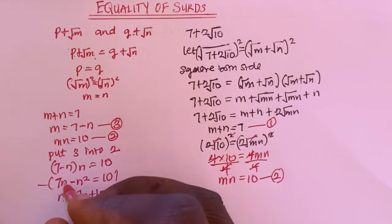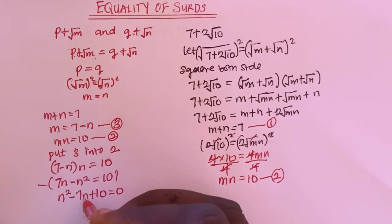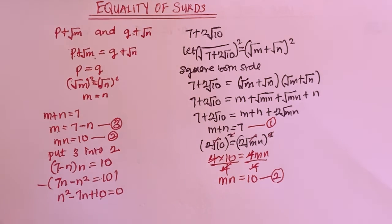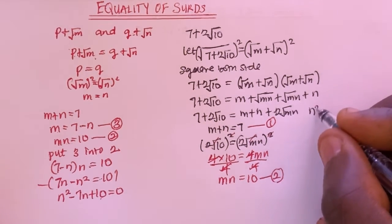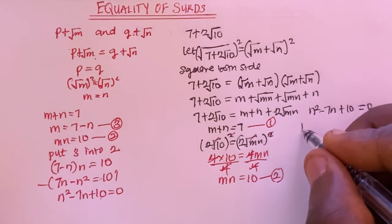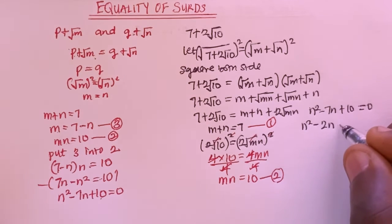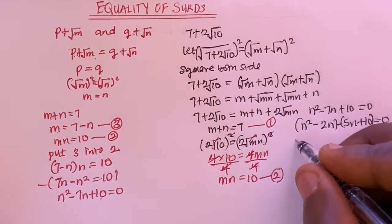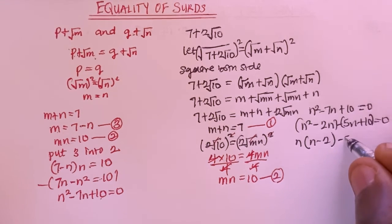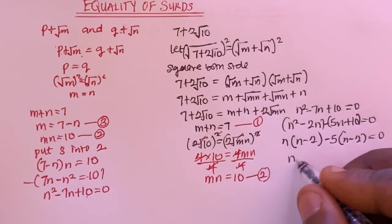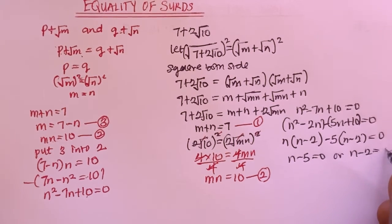If I multiply everything by minus one, I'm going to have N squared minus 7N plus 10 equals 0. I'm going to solve this using the factorization method. So N squared minus 7N plus 10 equals 0. Using 2 and 5, I get N squared minus 2N minus 5N plus 10 equals 0. Factorizing: N times N minus 2, minus 5 times N minus 2 equals 0. So N minus 5 equals 0 or N minus 2 equals 0, giving N equals 5 or N equals 2.